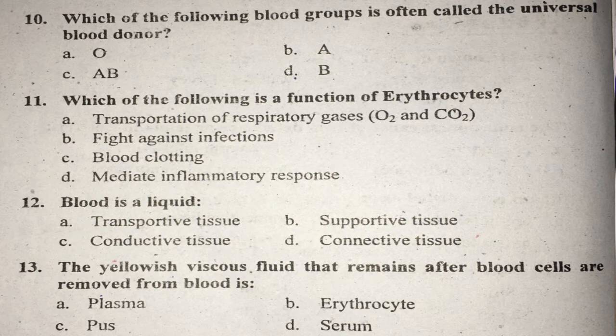Question thirteen: The viscous fluid that remains after blood cells are removed from blood is called what? After blood cells are removed, the remaining viscous fluid is plasma. Right answer is A.